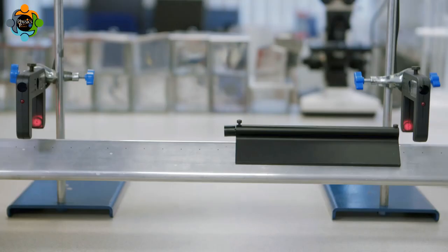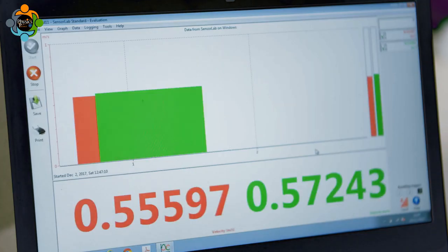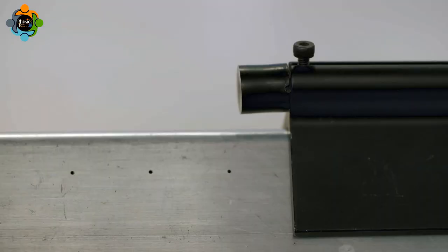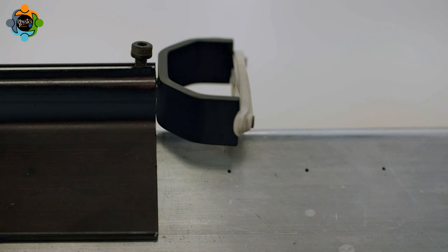Glider 1 is set in motion towards glider 2. The data logger shows that the velocity of glider 1 is approximately the same as that of glider 2. Momentum and kinetic energy are transferred from glider 1 to glider 2.